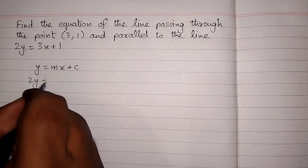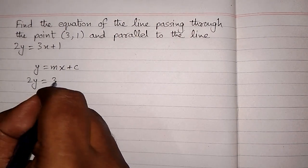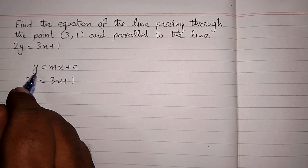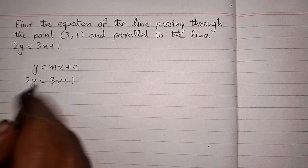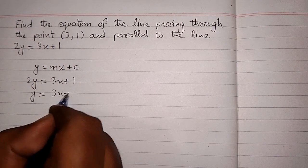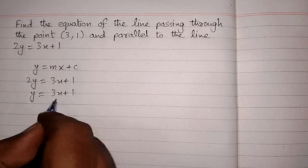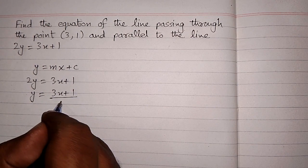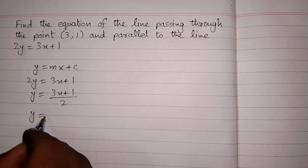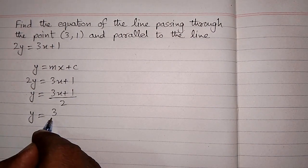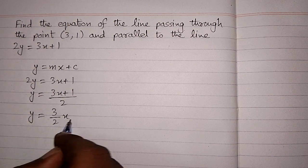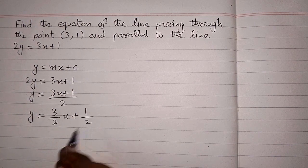We have 2y = 3x + 1. First we will make y the subject of the equation, so we divide both sides by 2 to get y = (3x + 1)/2. This can be written as y = (3/2)x + 1/2.